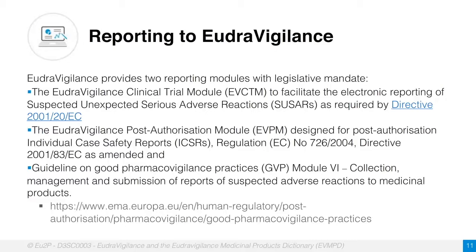We also have to abide by guidelines on good pharmacovigilance practices, GVP Module 6, which provides information on collection, management, and submission of reports of suspected adverse reactions to medicinal products. Further information can be found on the EMA's website.